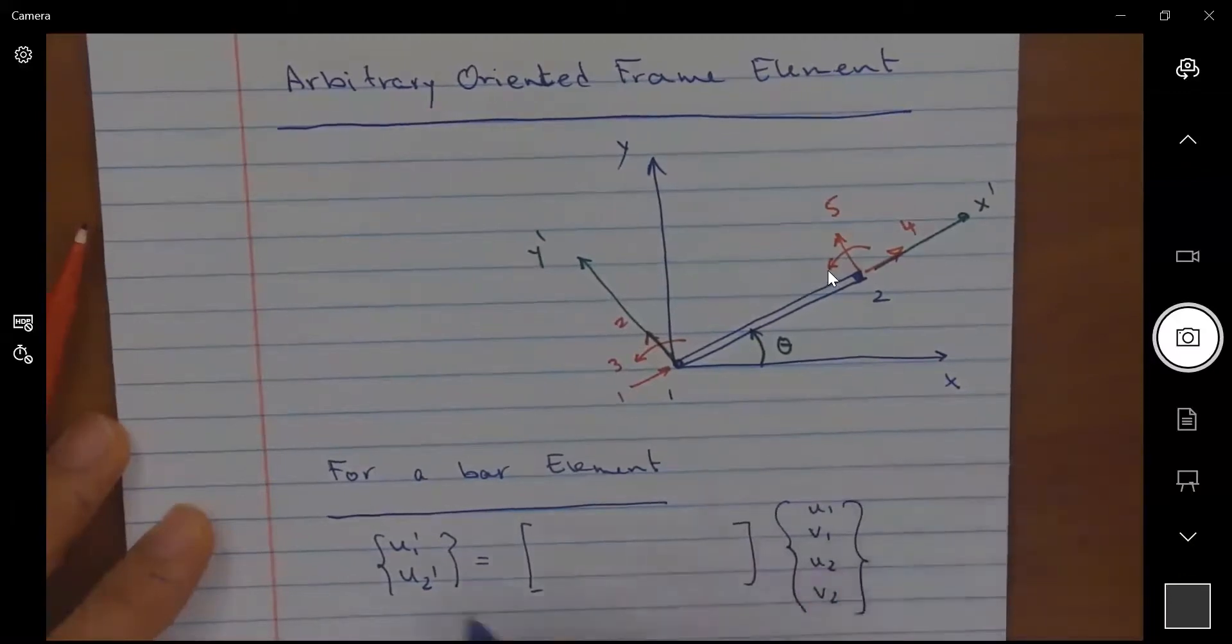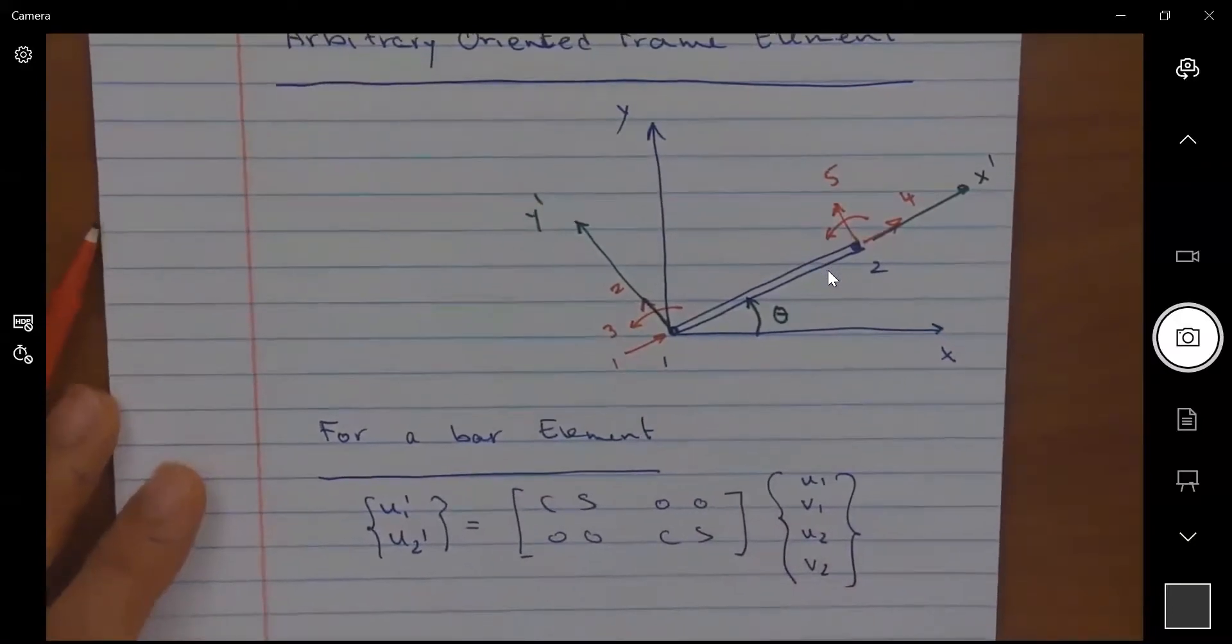We used a transformation matrix that was c, s, 0, 0, 0, 0, 0, 0, c, s. Correct?